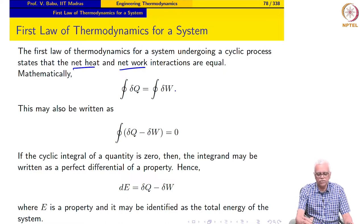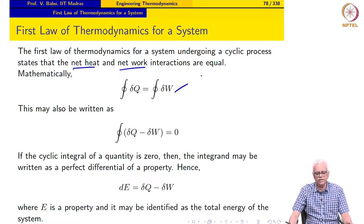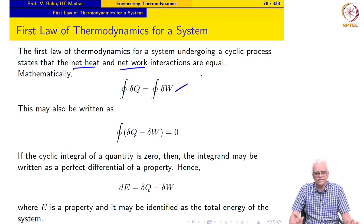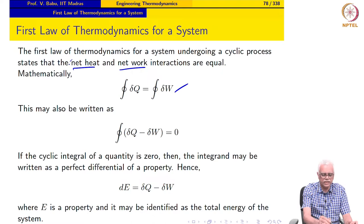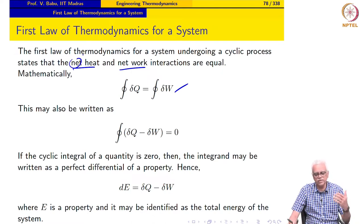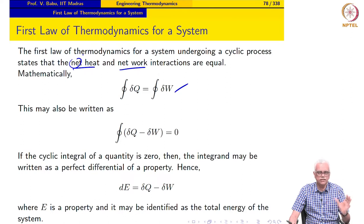Mathematically, we may write this statement as: cyclic integral of delta Q equals cyclic integral of delta W. We say net heat and net work interaction because of the sign convention that we use — things will be taken care of automatically.